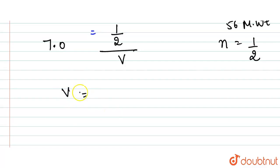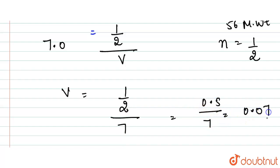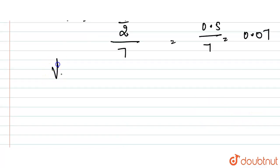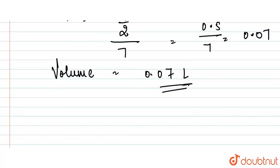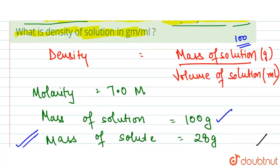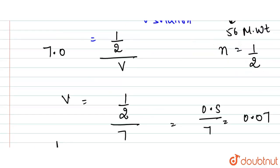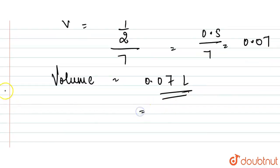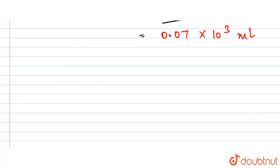Using the molarity formula: 7.0 = 0.5 / V, so V = 0.5 / 7 = 0.07 liters. Converting to milliliters, the volume equals 0.07 × 10³ milliliters, which is 70 milliliters.